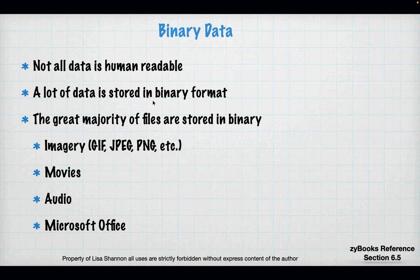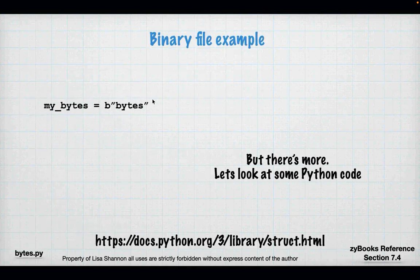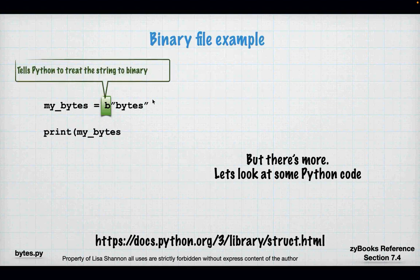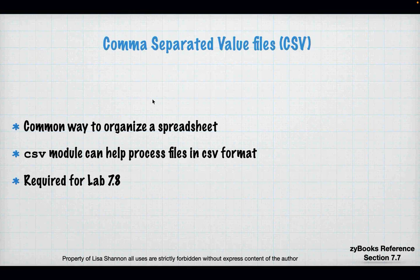A quick note on binary data: not all data is human readable. Images like JPEG, GIF, PNG, movies, audio, and Microsoft Office files are all binary — encoded and not human readable. Since Zybooks mentions it, it's worth noting: you can deal with binary data by using 'b' in front of your value, which turns it into bytes and tells Python to treat the string as binary.